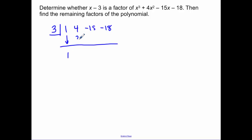I don't need any placeholders. I just did a quick check of that. Bring down the 1, times 3 is 3, add to get 7, times 3 is 21, that's going to be 6, times 3 is 18. Remember this last number is the remainder. So yes, it is a factor because our remainder ended up being 0.